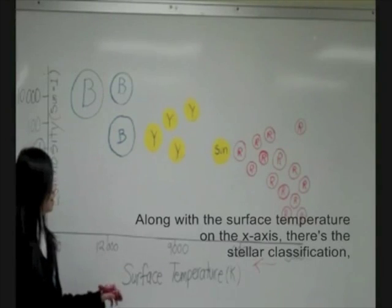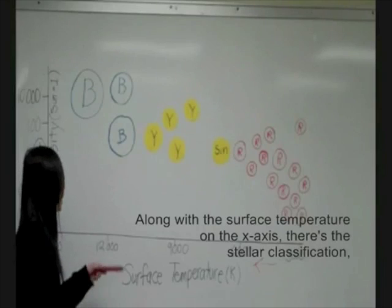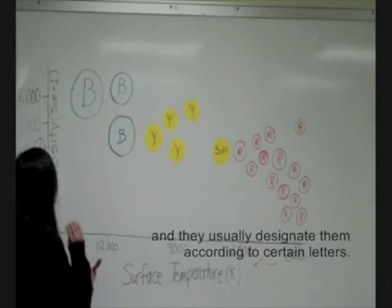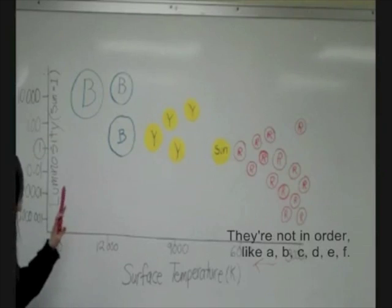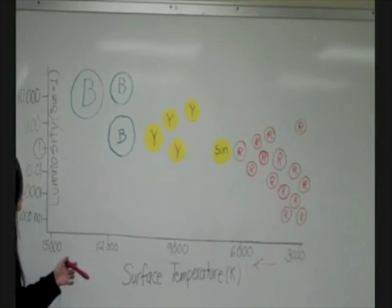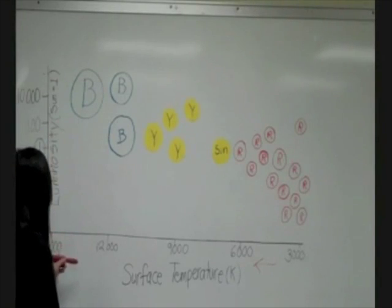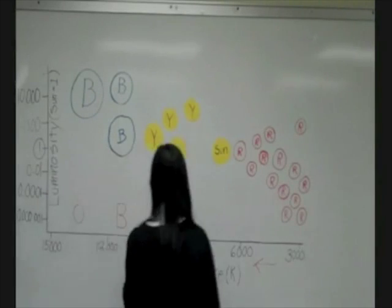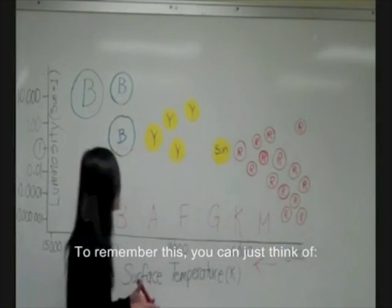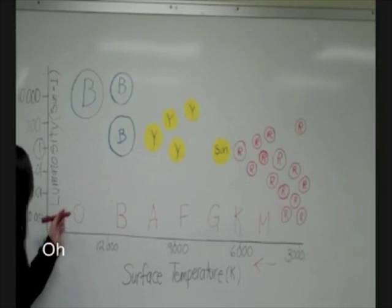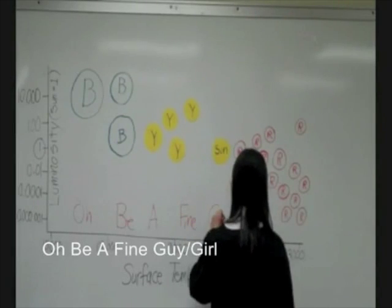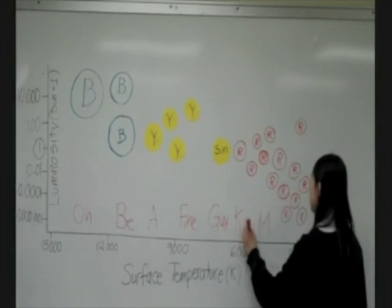Also along with the surface temperature, on the x-axis there's the stellar classification. And we usually designate them according to certain letters. They're not in order like ABC. So it would be O, B, A, F, G, K, M. To remember this, you can just think of Oh Be A Fine Guy or Girl.